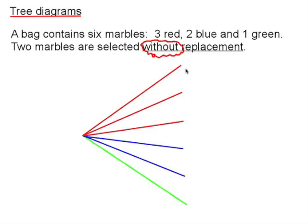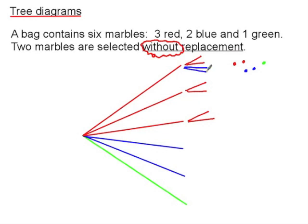If we've taken out a red marble, left in the bag are now two red marbles, still two blue and one green. So at the end of each of these red branches, we have two more red branches, two blue branches and a green branch.